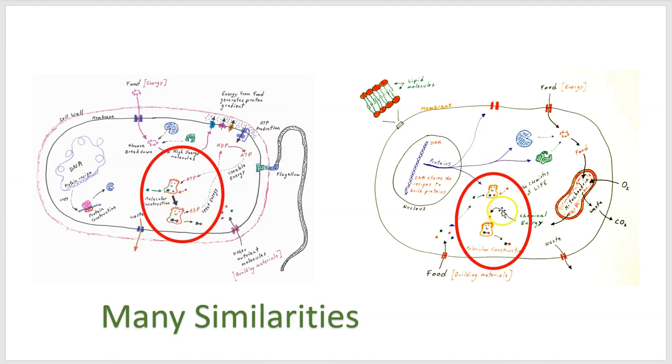All cells, the bacteria and the complex cells, have teams of proteins that will do construction projects that will take the nutrients from food and build important molecules that cells are made of. And all cells, bacteria and complex cells, have DNA. DNA stores the recipes to build all the proteins of the cell and it can be duplicated as well, which permits reproduction.